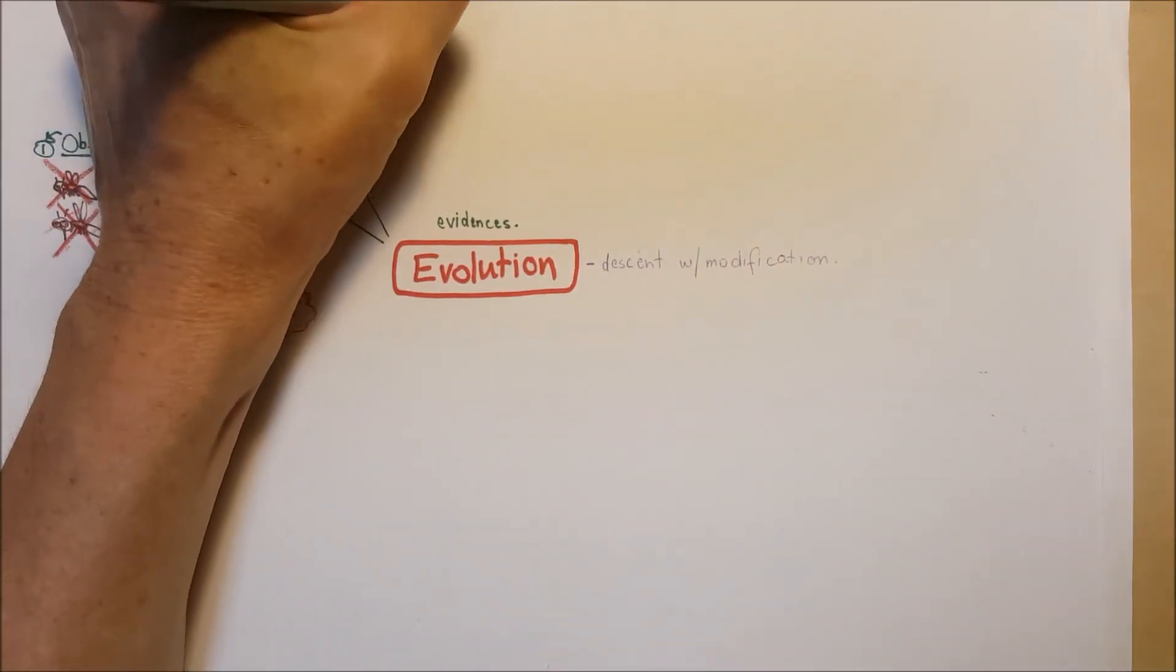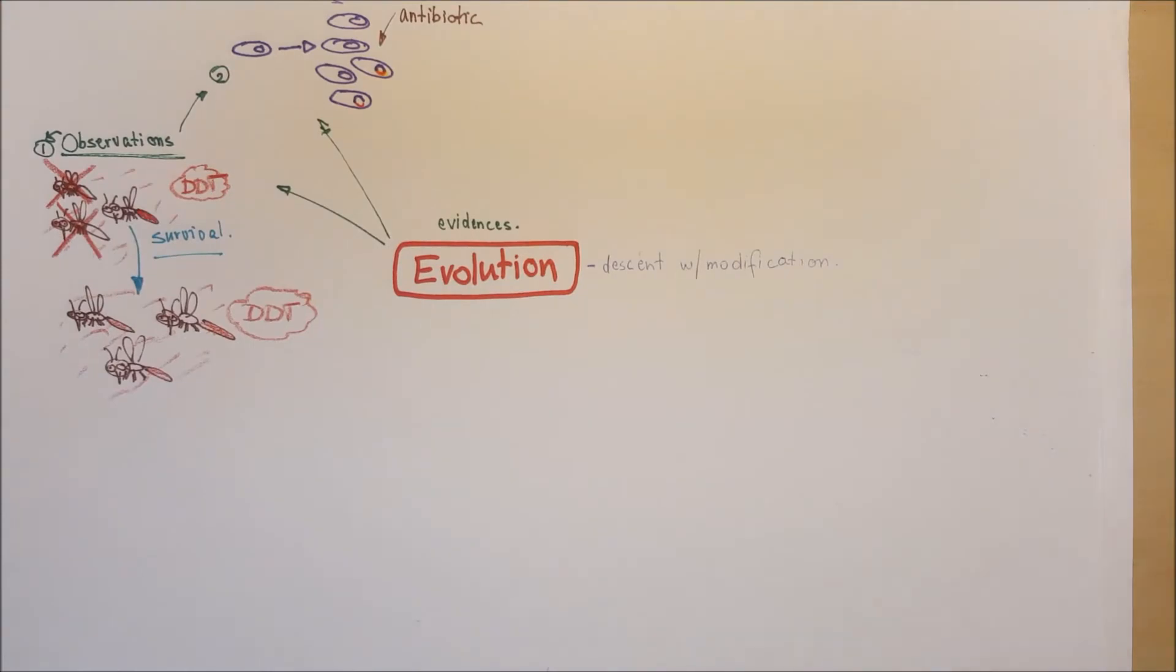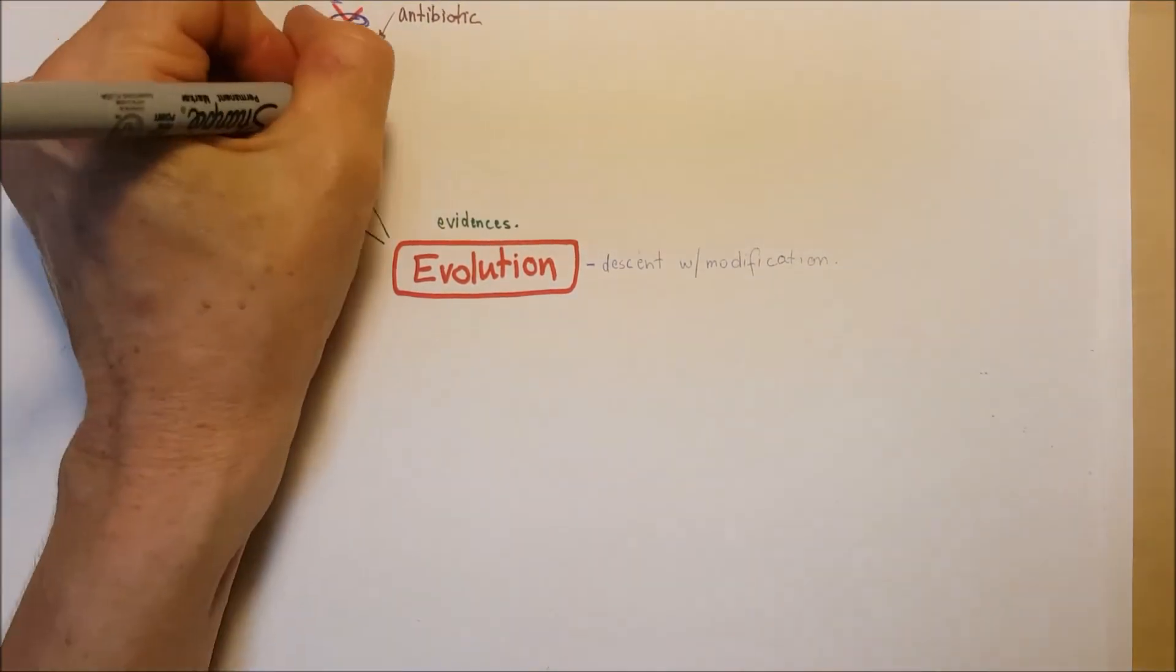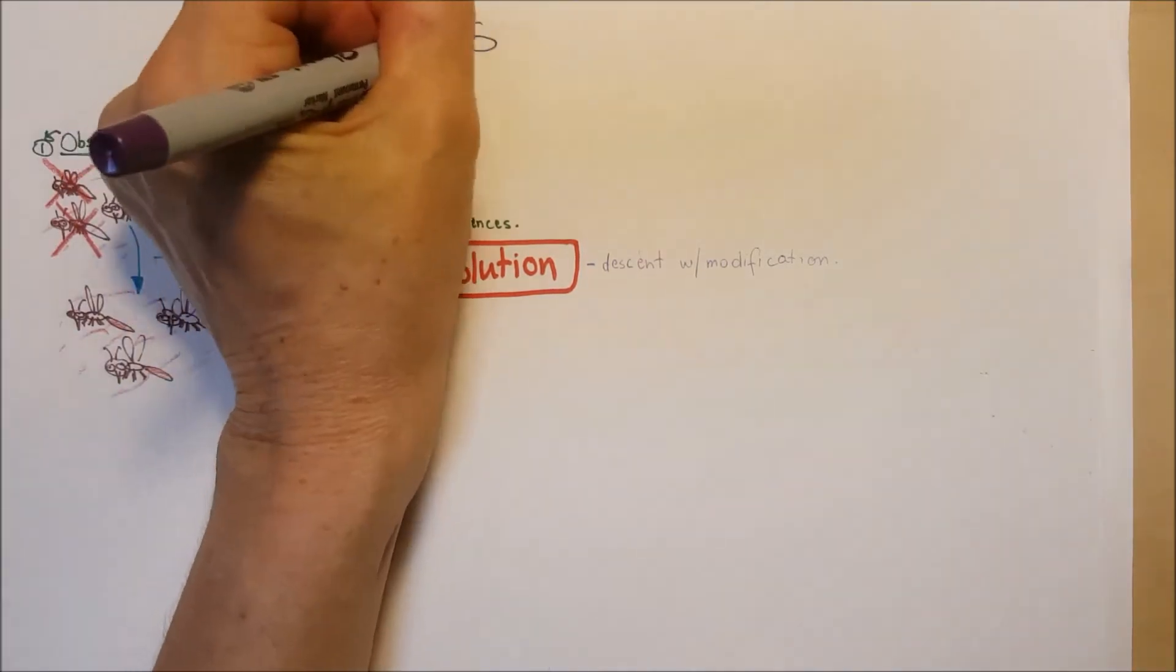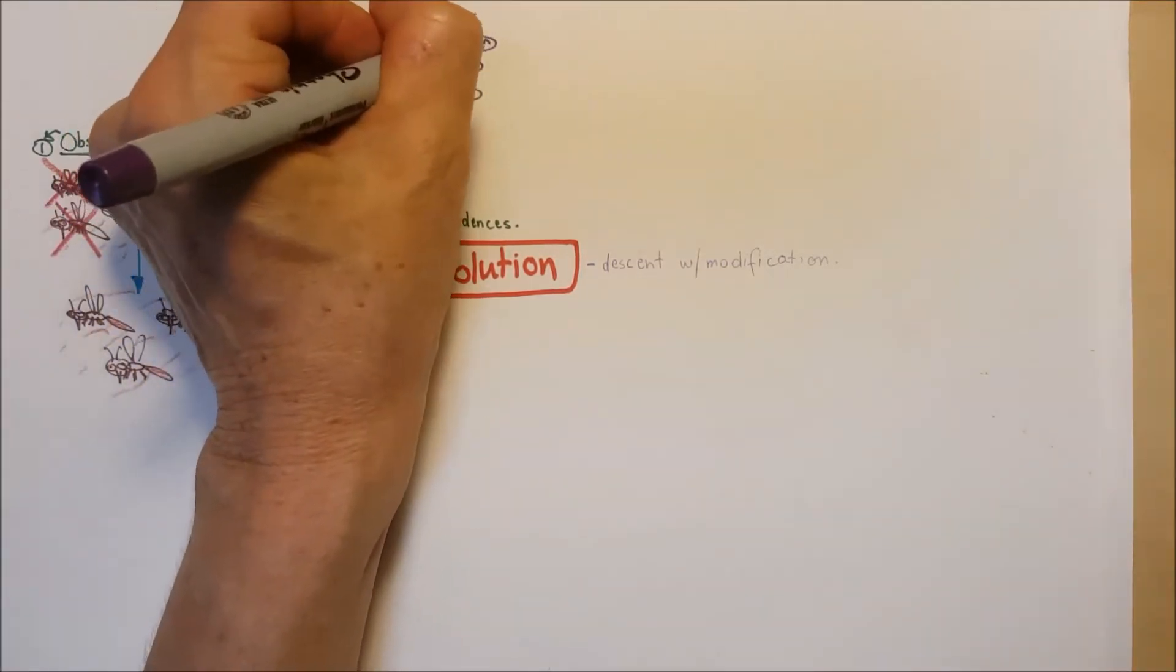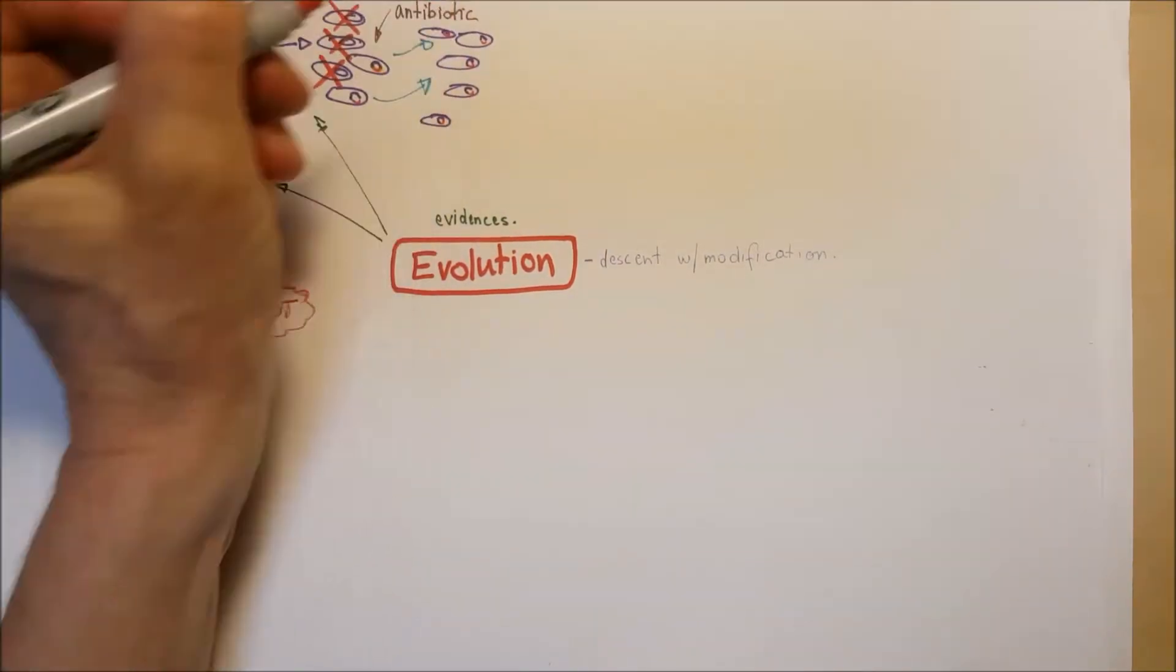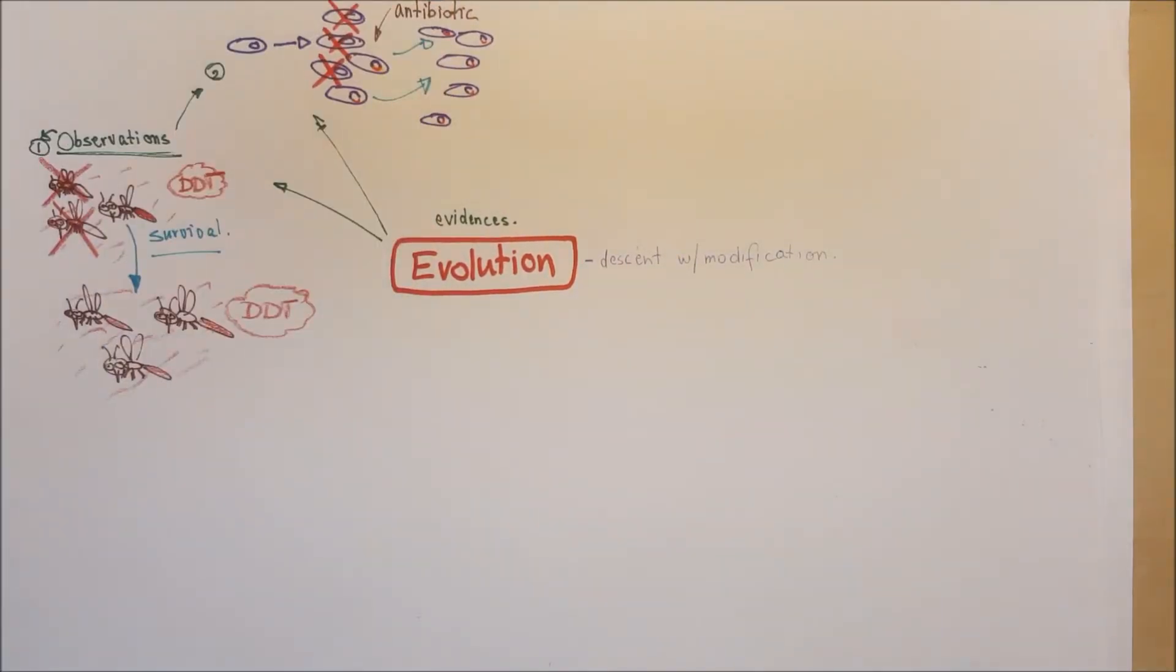So, when we use an antibiotics, all of them that doesn't have resistance will die. And those who are resistant to the antibiotics can produce another generation, another generation of bacteria that is resistant to antibiotics.